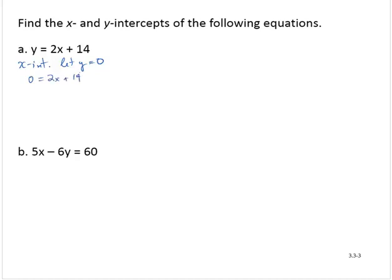Solving for x, I would subtract 14 from both sides. So then negative 14 is equal to 2x. And then I would divide through by 2.